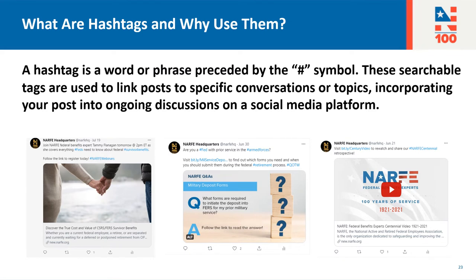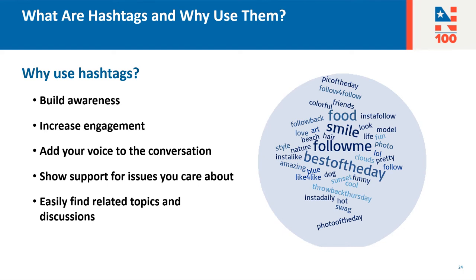Now that we've gone over creating accounts, let's talk a little bit about hashtags and why you should use them in your posts. A hashtag is a word or phrase preceded by the pound or number symbol. These searchable tags are used to link posts to specific conversations or topics, incorporating your posts into the ongoing discussions on that social media platform. So why use hashtags? They're a great way to help build awareness for an issue or an event. They also lead to increased engagement — posts with hashtags are much more likely to be engaged with by your audience than posts without. Hashtags also allow you to add your voice to a conversation that's already happening, show support for issues you care about, and find related topics and discussions.